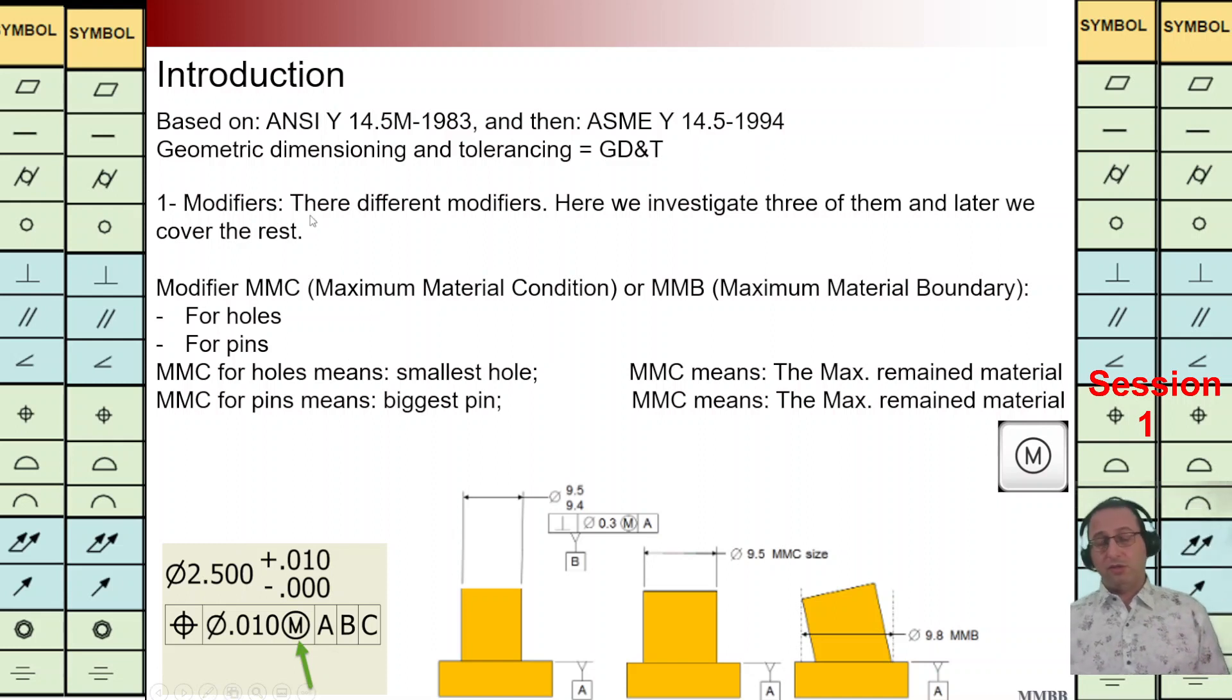Geometric dimensioning and tolerancing GD&T is based on NC ANSI Y14.5M-1983 and then ASME Y14.5-1994.